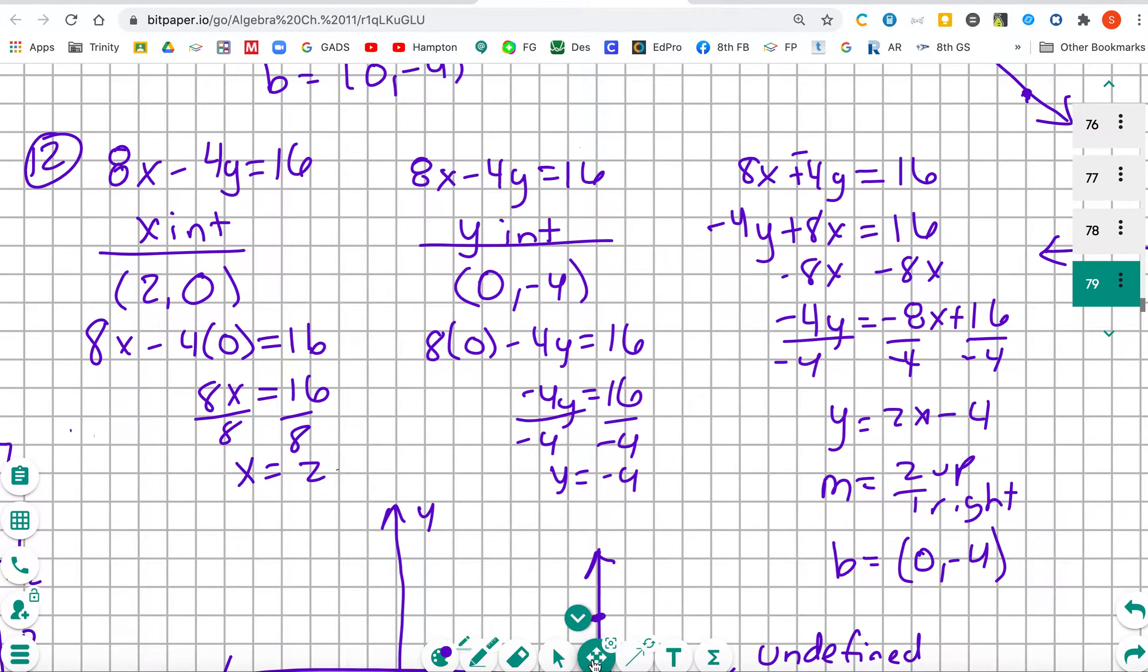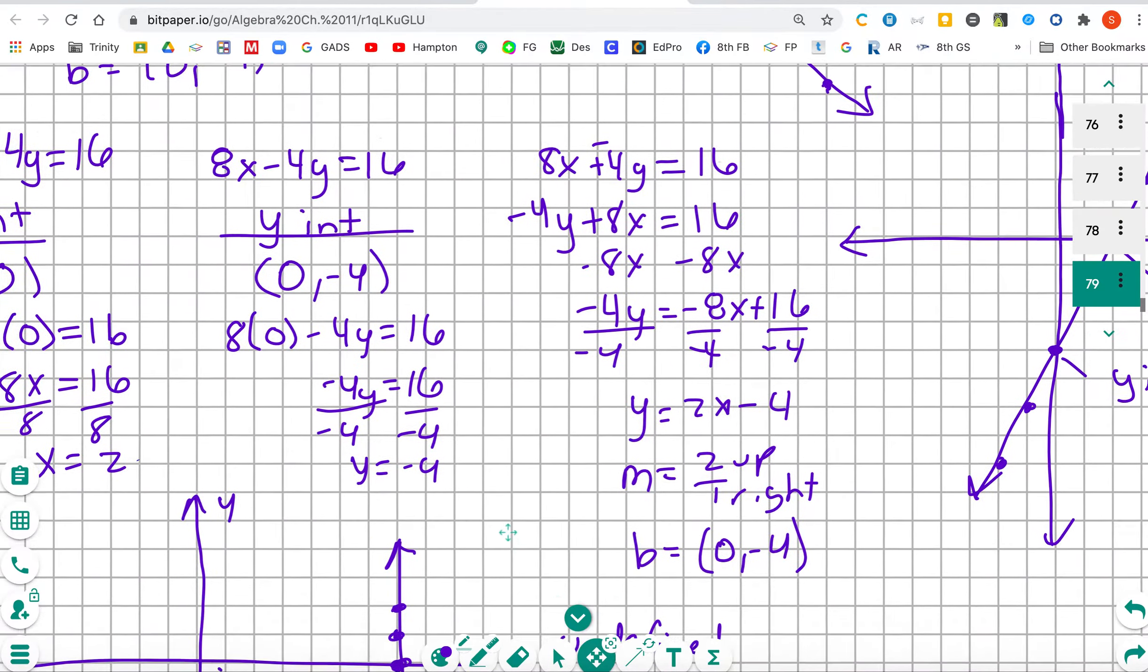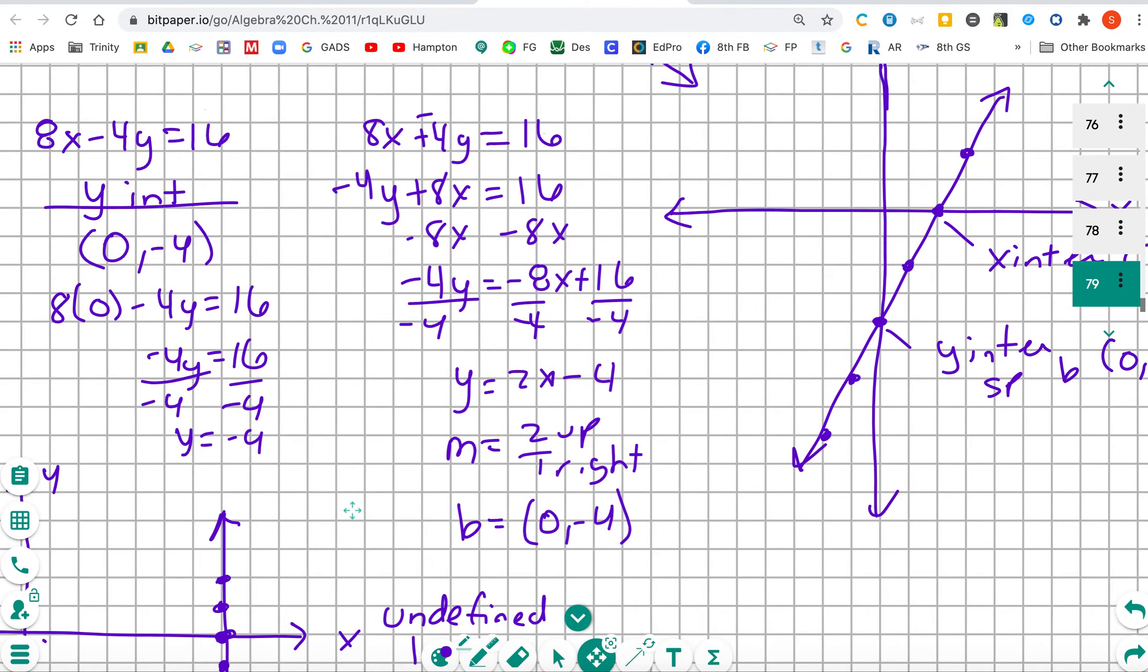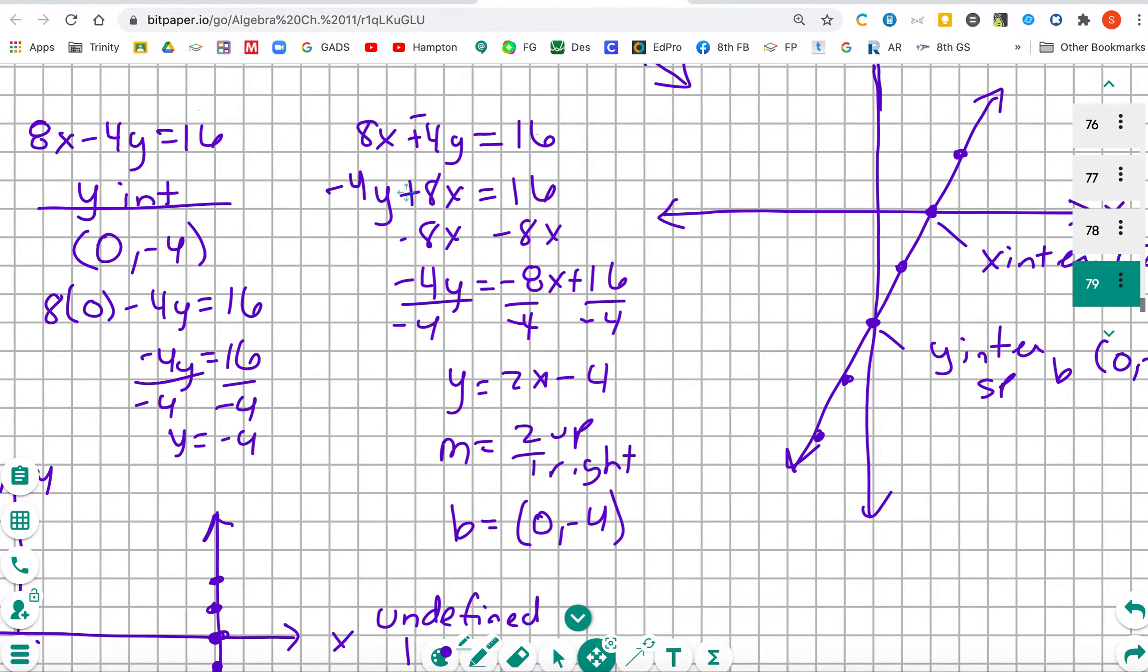Now, in order to graph, we need a slope. So we're going to come up here and take the 8x minus 4y equals 16. Is the y first? It's not. So we'll do keep, change, change, and then do commutative property of addition. That will give us negative 4y plus 8x is equal to 16.